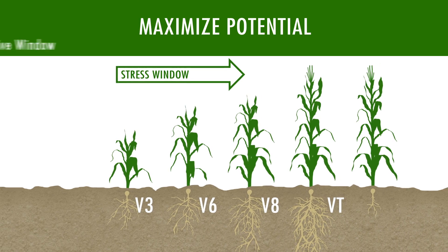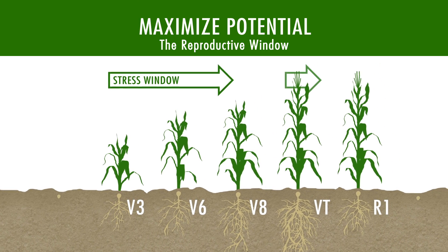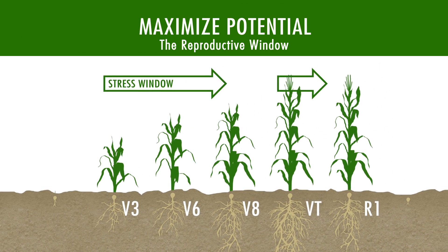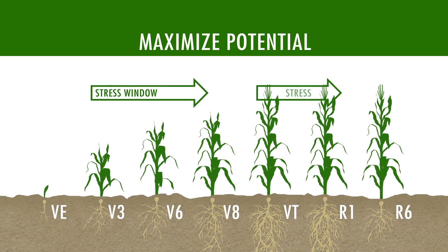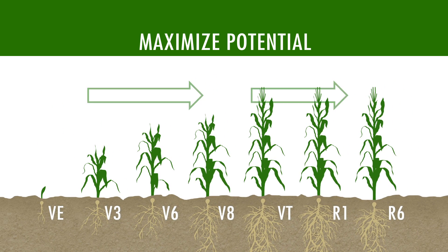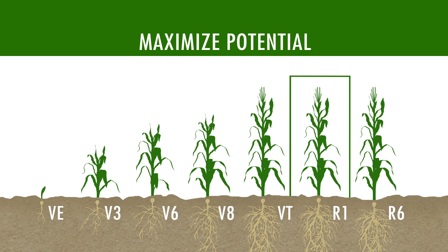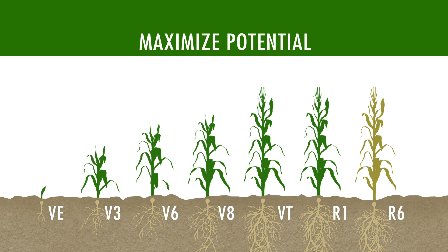The reproductive window focuses on increasing grain fill and kernel size while reducing stress. In this final stage before harvest, we concentrate on keeping your plants green longer and reducing temperature stress during pollination. The result is a fully mature crop going into harvest that will maximize the genetic potential of your seed.